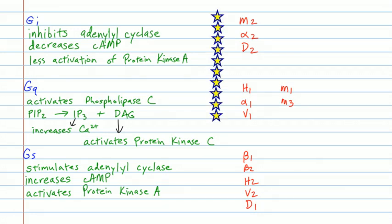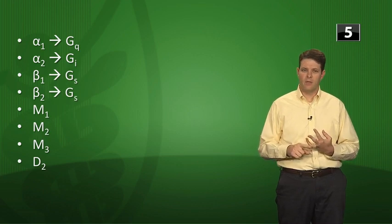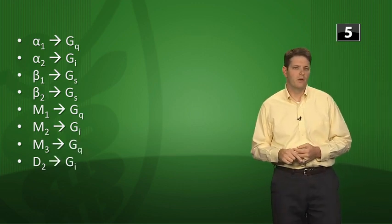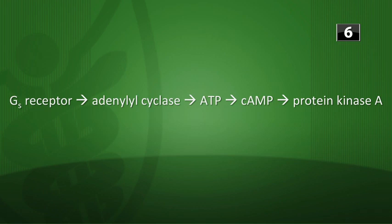Quiz answers: alpha 1 → Gq; alpha 2 → Gi; beta 1 → Gs; beta 2 → Gs; M1 → Gq; M2 → Gi; M3 → Gq; D2 → Gi. For the pathway by which Gs receptor stimulation activates protein kinase A: Gs receptor activates adenylyl cyclase → adenylyl cyclase converts ATP to cyclic AMP → cyclic AMP activates protein kinase A. These G protein pathways will continue to be tested in warm-up quizzes.